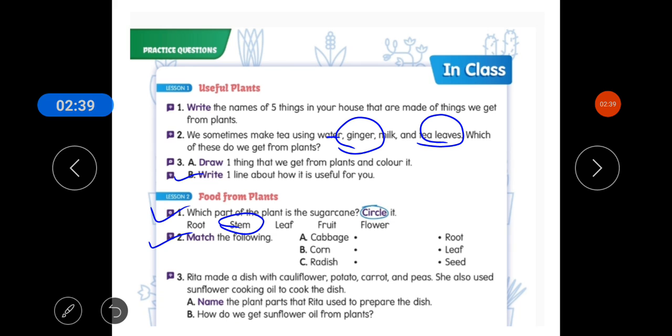So match the following. So you have to match this one. Cabbage is leaves, corn is seed and radish is root. So you have to complete it in this way.